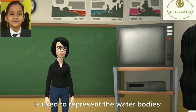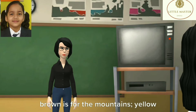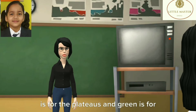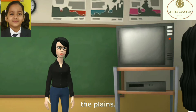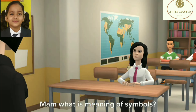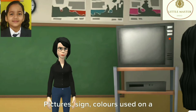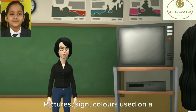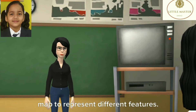Blue is used to represent the water bodies. Brown is for the mountains. Yellow is for the plateaus. And green is for the plains. Ma'am, what is the meaning of symbols? Pictures, signs, and colors used on a map to represent different features.